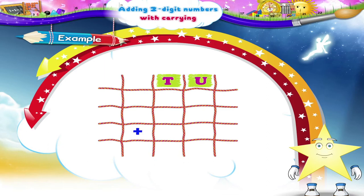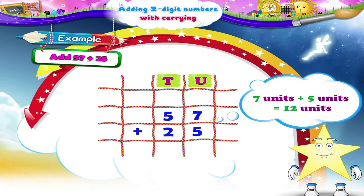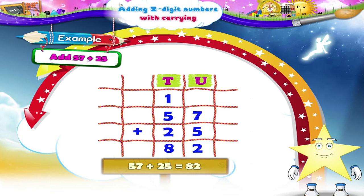Starry, look at this addition carefully. Here we are adding two two-digit numbers, but the method remains the same. Add fifty-seven plus twenty-five. What is the first step? Yes, we first add the digits in the units place. Seven units plus five units equals twelve units. Now let's carry over one ten to the tens column and write two in the units place of the answer. Adding tens, we get five tens plus two tens plus one ten equals eight tens. So fifty-seven plus twenty-five equals eighty-two.